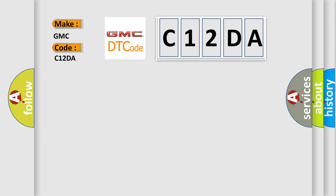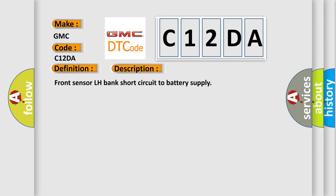For GMC car manufacturers, the basic definition is O2 sensor circuit high voltage bank 1, sensor 1. And now this is a short description of this DTC code: Front sensor LH bank short circuit to battery supply.